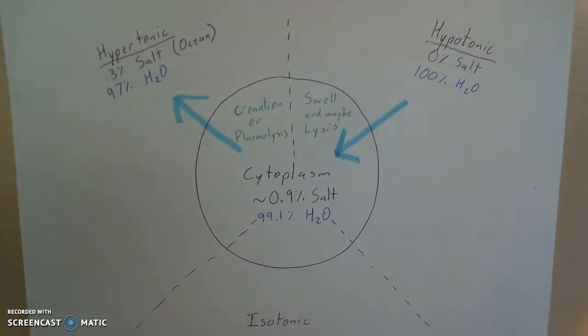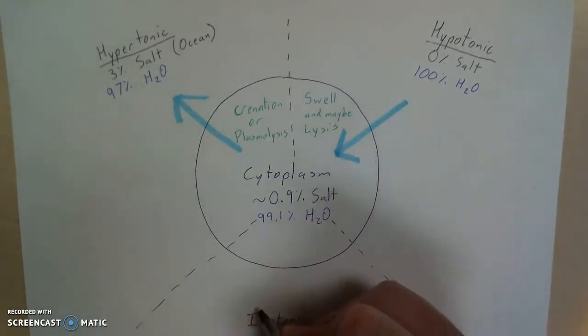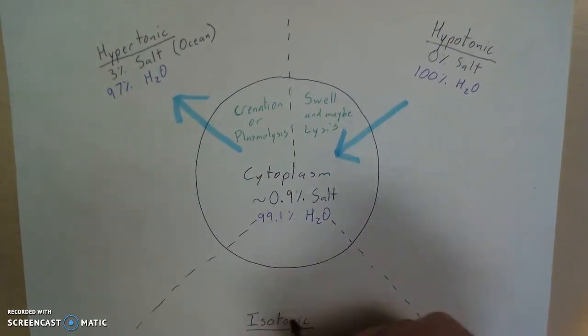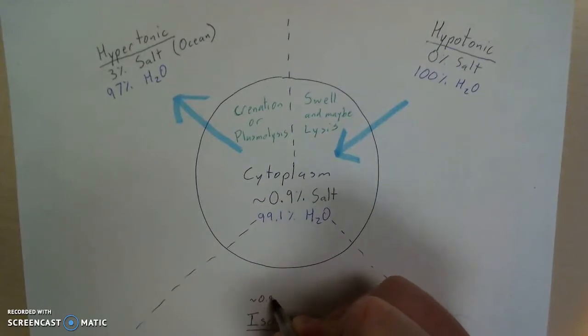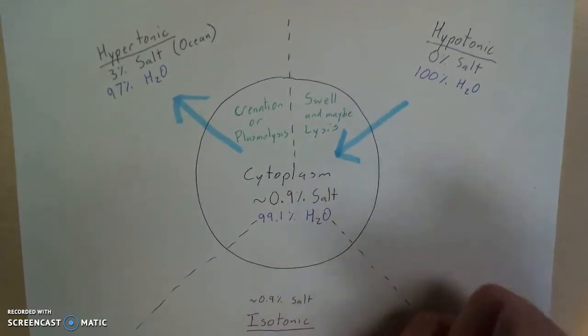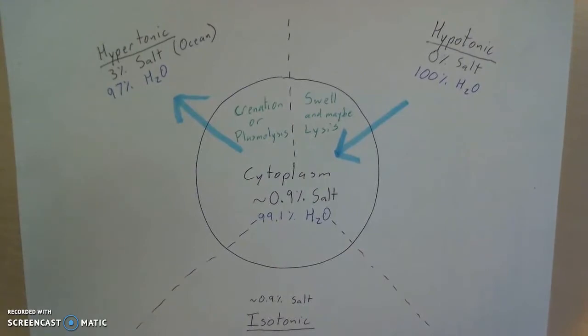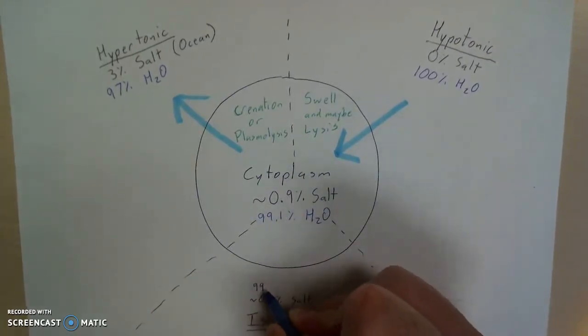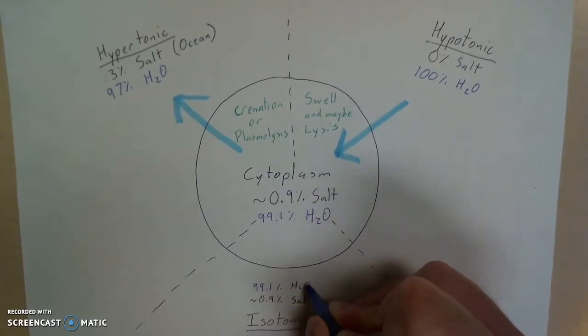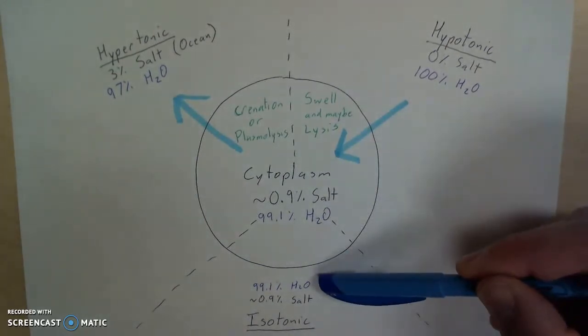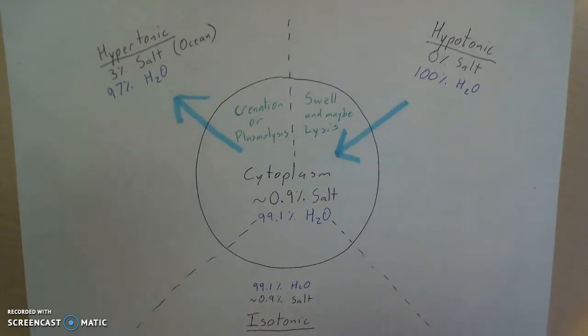So now let's think about this isotonic environment. So iso essentially means equal. So an isotonic, equal salt environment is going to have the same salt as what we're comparing to. So an isotonic environment will have about 0.9% salt. Again, that means that this isotonic environment has basically 99.1% water. So here, the concentrations of water inside the cell and outside the cell are equal.